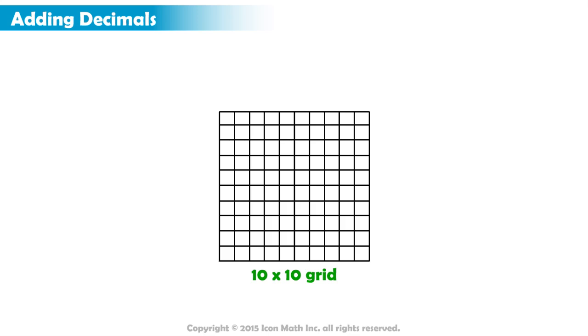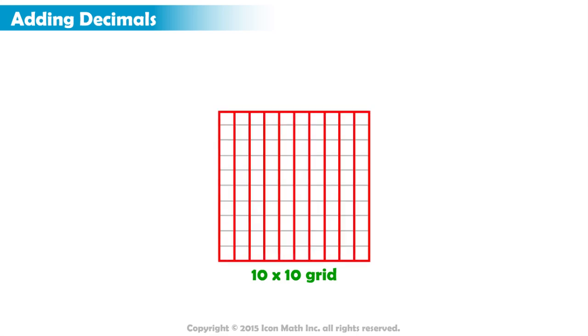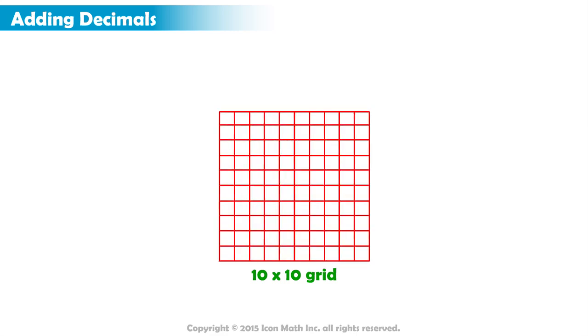We have a grid made of 10 rows and 10 columns creating 100 tiny squares. Now how do we use this grid to add the decimals 24 hundredths and 58 hundredths?